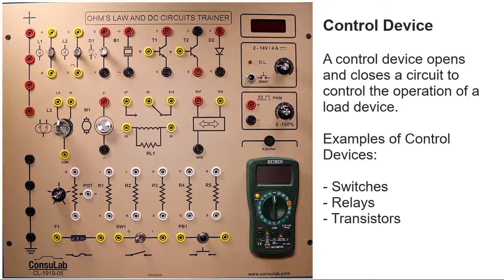The control device is a component that can open and close the circuit to control the operation of the load. On this trainer board the control devices are two transistors which are solid state devices, a 5 pin relay which has one input and two outputs, a single pole single throw basic on-off toggle switch, and a momentary push button switch.